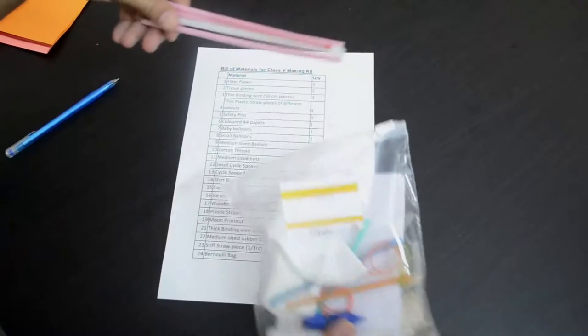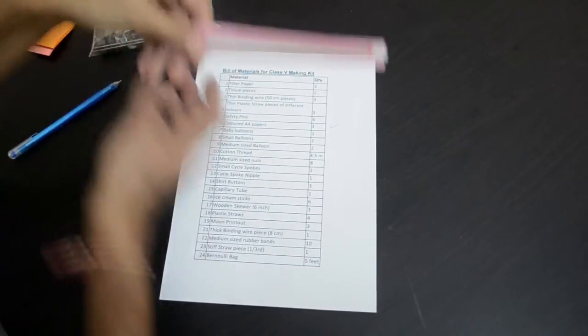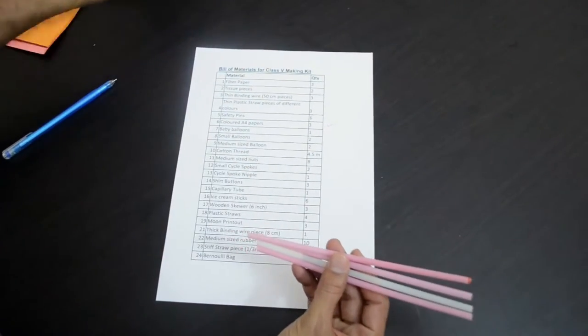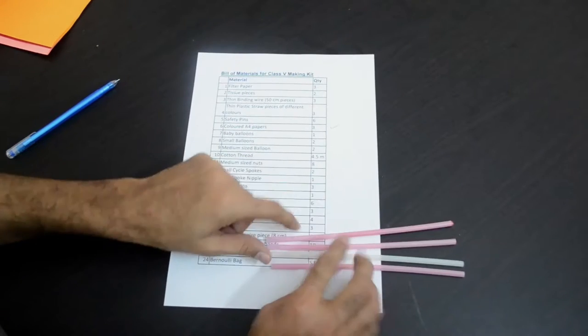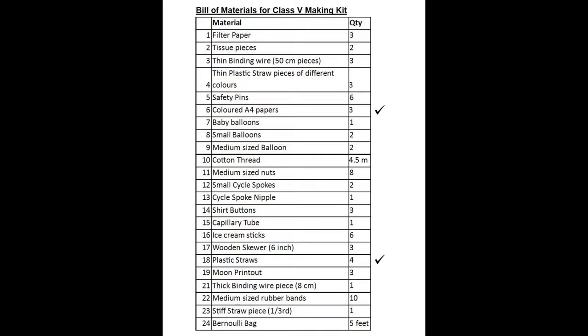Then we have these plastic straws. There are 4 of them. In our list of items, it is item number 18, 4 plastic straws.